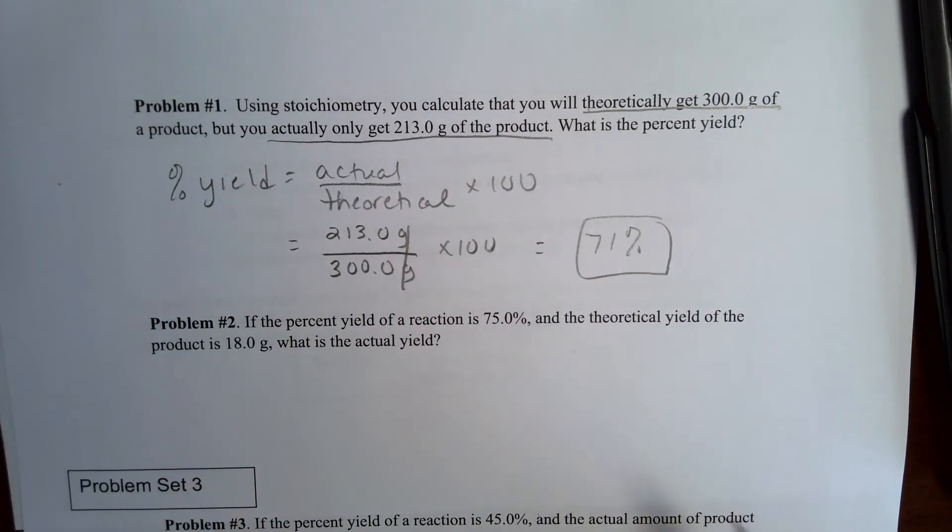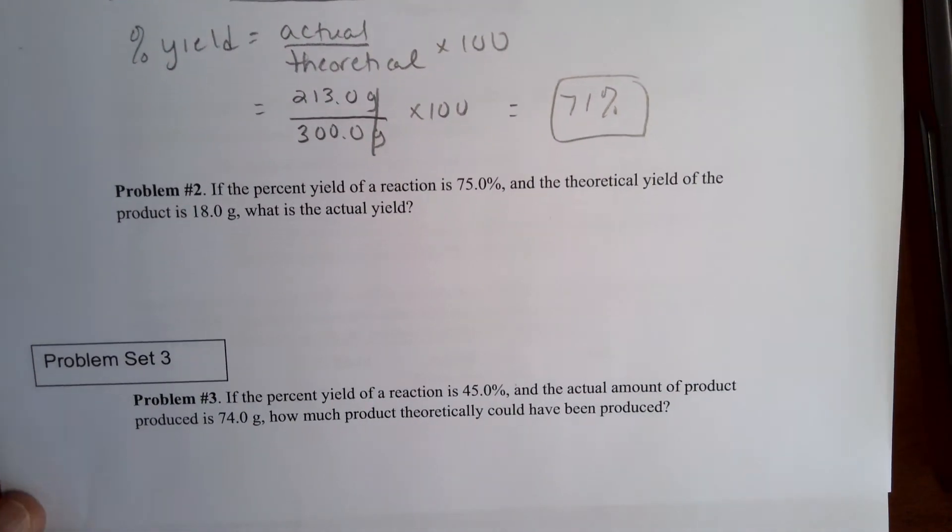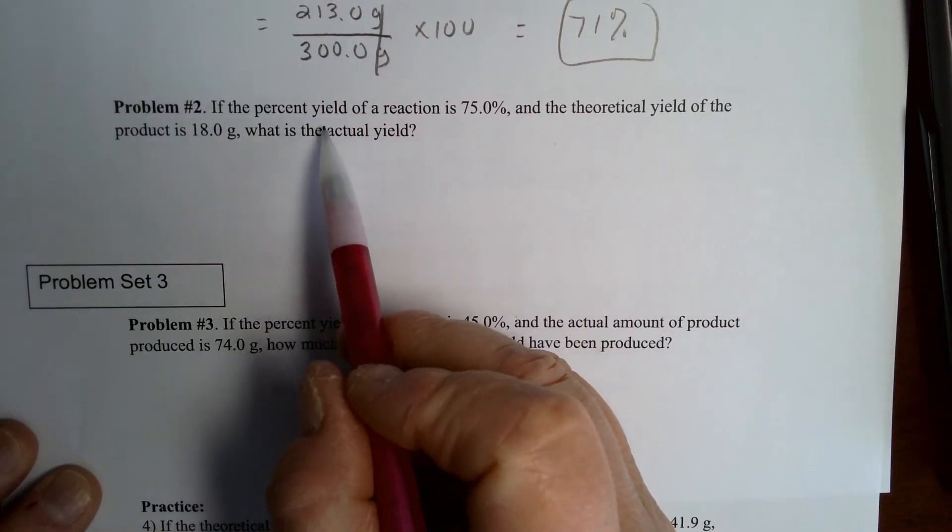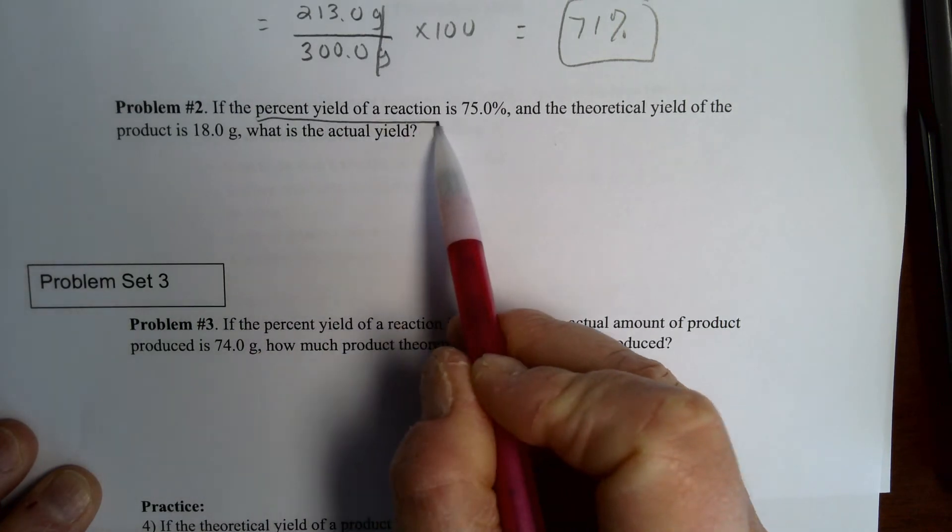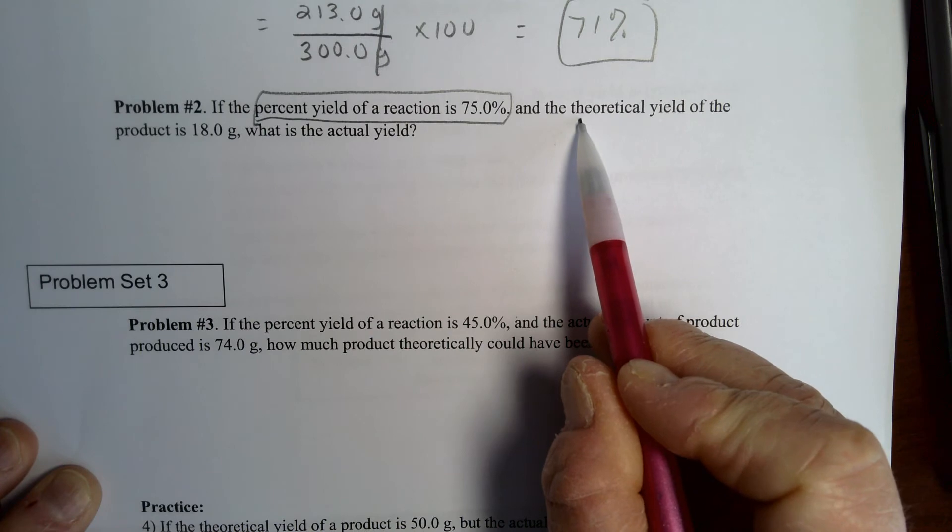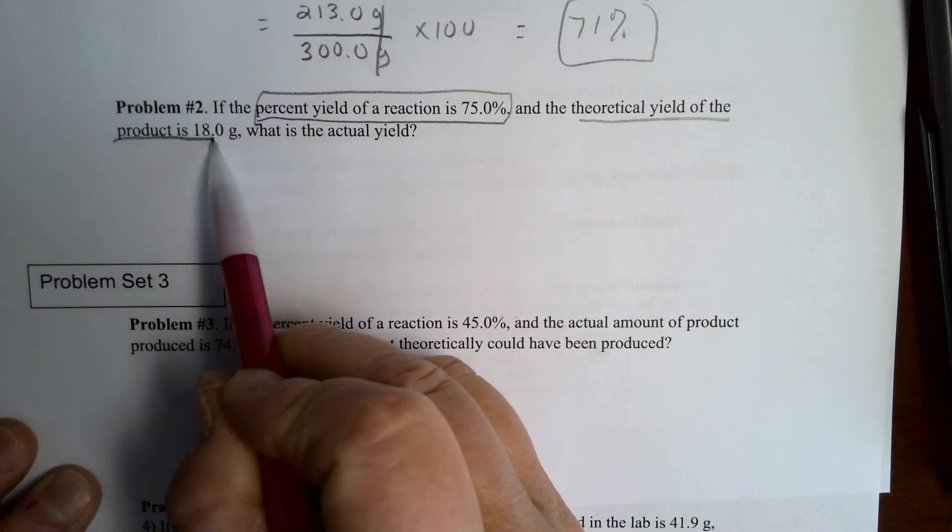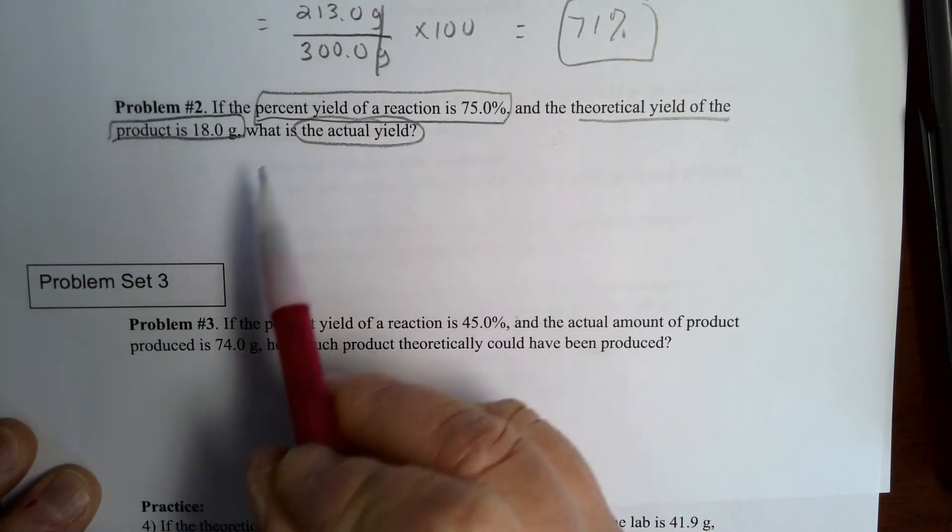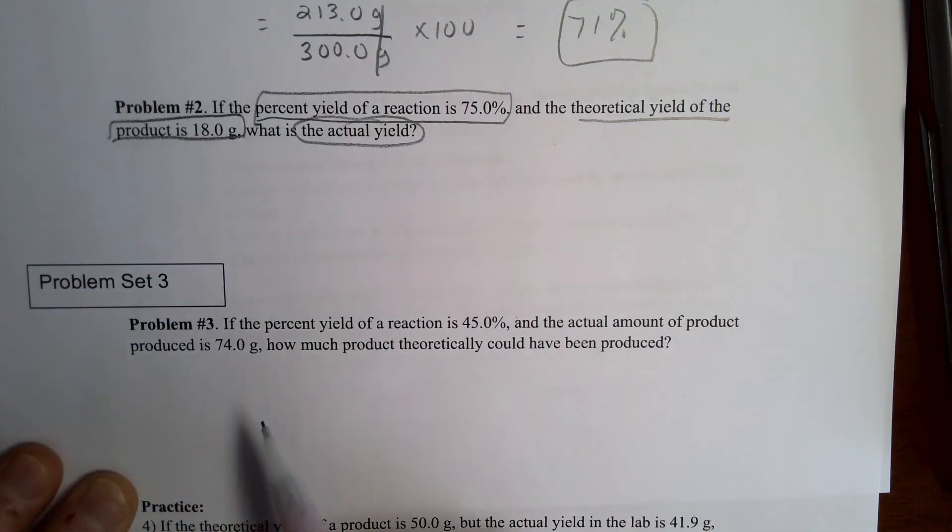All right, let's take a look at one more problem here. In this case, the percent yield is being given to you at 75%, and the theoretical yield is being given to you at 18 grams. We are actually trying to find the actual yield.